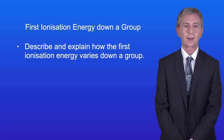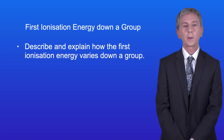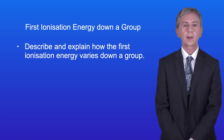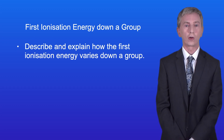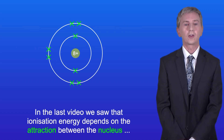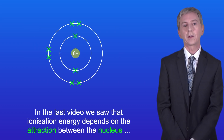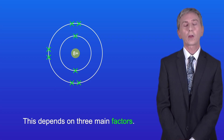Hi and welcome back to Free Science Lessons. By the end of this video you should be able to describe and explain how the first ionization energy varies down a group. In the last video we saw that ionization energy depends on the attraction between the nucleus and the electrons in the outer shell, and this depends on three main factors.